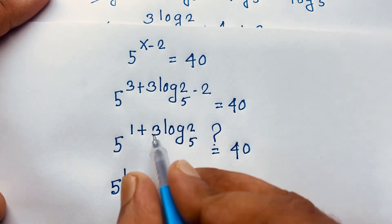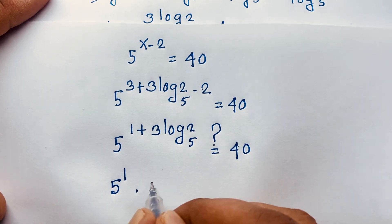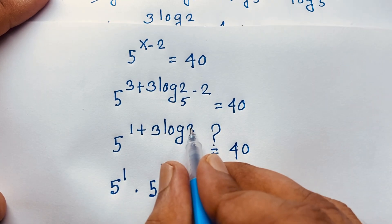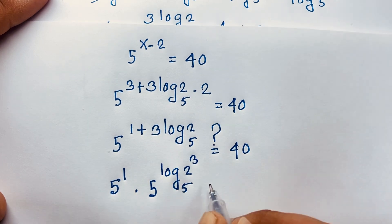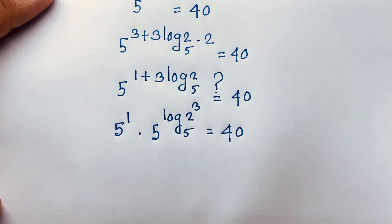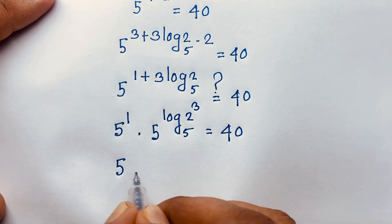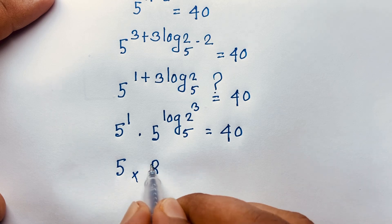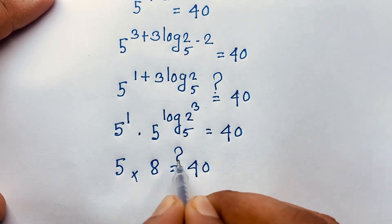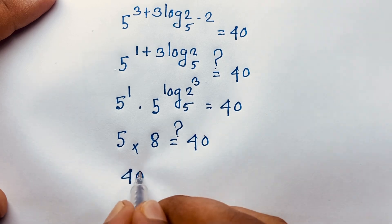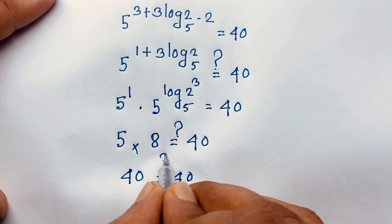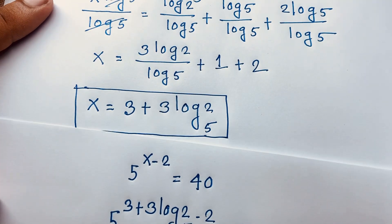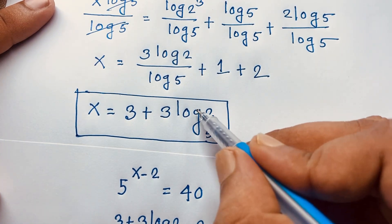5 to the power 1, times 5 to the power log base 5 of 2 to the power 3, is equal to 40. So 2 to the power 3 equals 8. Then 5 times 8 equals 40, which equals 40. So left hand side and right hand side are both equal. Therefore, x equals 3 plus 3 log 2 base 5 is confirmed as our final answer in this German math Olympiad question.